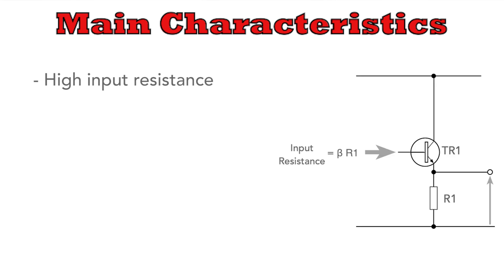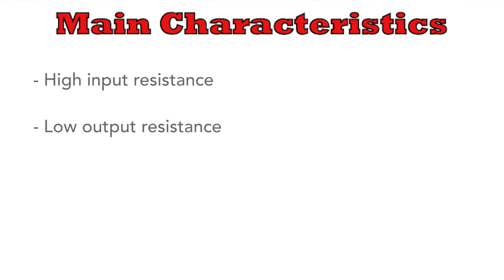The input resistance is typically beta, the transistor current gain, times the overall emitter resistance including the load. The circuit also has a low output resistance and this makes it suitable for driving lowish impedance loads.